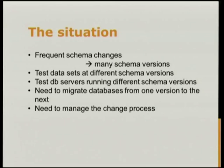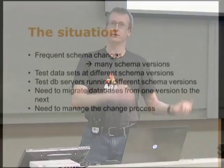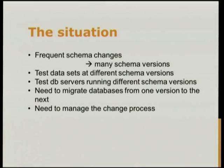The situation is we're working on a relatively young product, and we're adding features as fast as we can. Because of that, there are frequent schema changes and hence many schema versions. Our test data is at different schema versions because it's written at different times. We have databases on all the dev machines at their own versions for whatever branch they're working on. We have VMs for testers running at whatever version they're on, and we need to manage that whole mess of different versions left, right, and center.